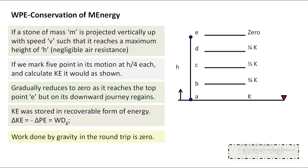Another observation: what is the work done by gravity in a round trip? A round trip means the object comes back to the same point from where it started. The work done by gravity in a round trip is zero.